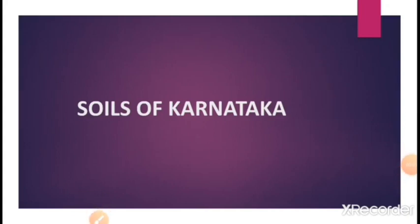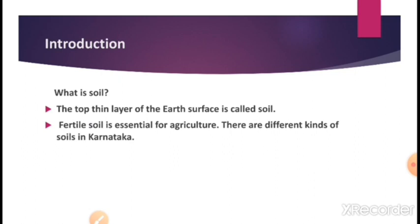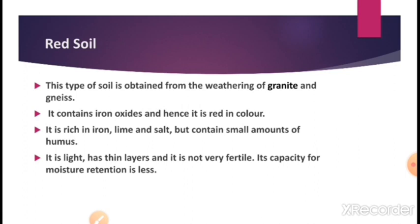Now let us go to the second topic: Soils of Karnataka. Soils in Karnataka are mainly divided into four groups: red soil, black soil, laterite soil, and coastal alluvial soil. Before studying the types and formation of soils, we need to understand what soil is. Soil is the top thin layer of the earth's surface. Among the many layers of the earth, the topmost layer is called soil. Soil is used for different purposes — mainly, agriculture requires fertile soil to produce many types of crops.